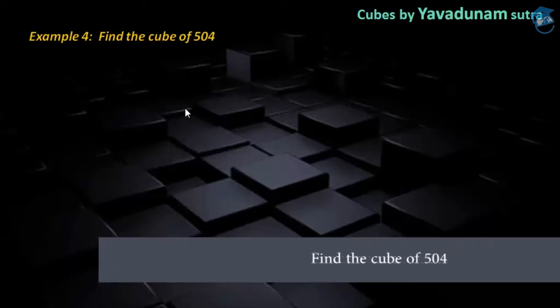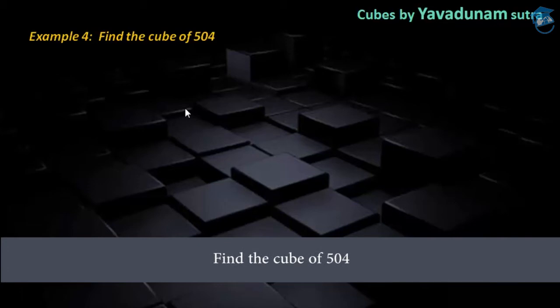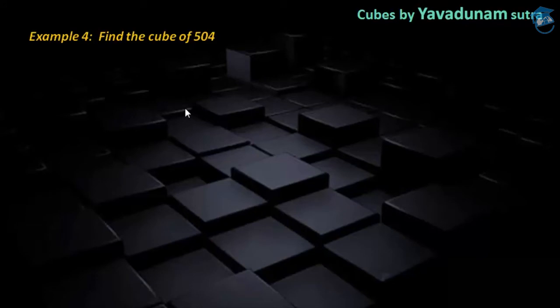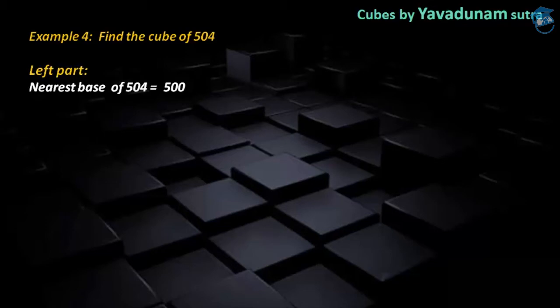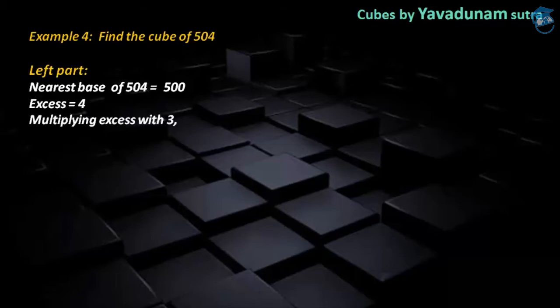In order to find the cube of 504, we have some parts of procedures. The first part is the left part. The first step here is we have to find the nearest base of the given number, and the nearest base of 504 is 500. After finding the nearest base, we have to find Xs. The Xs is found by comparing the given number with the base: 504 compared to 500 gives an Xs of 4. After finding the Xs, we have to multiply the Xs with 3, so 3 into 4 gives us 12 as the product.